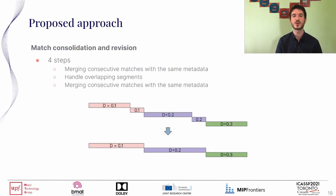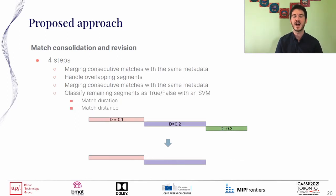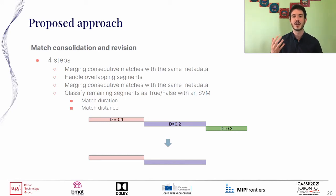The third step is to again merge consecutive matches identified as the same track. This is a trivial step, but required since we split some overlapped parts in the previous step. The final step is to identify matches as true or false using a classifier. We used a support vector machine classifier, giving match durations and match distances as input features to identify whether matches are correct or false positives.